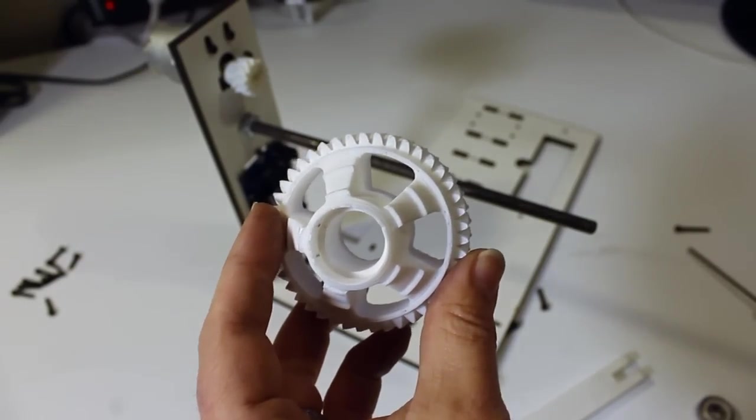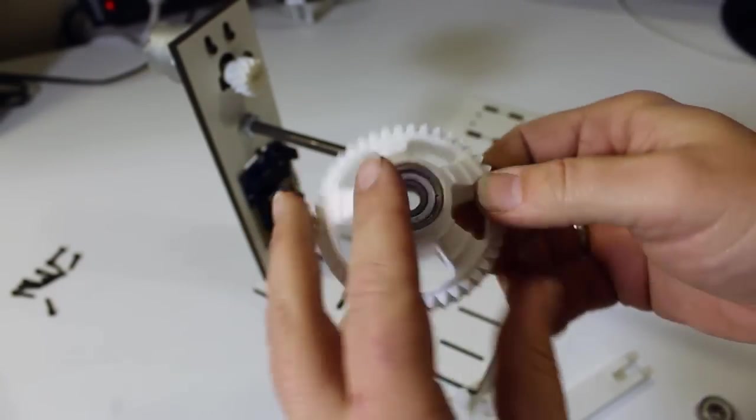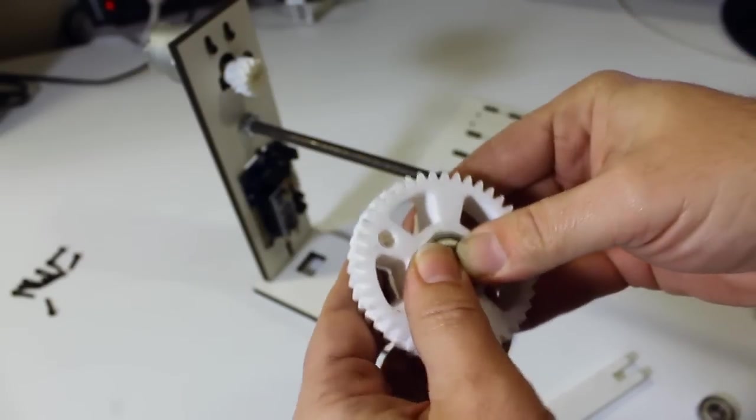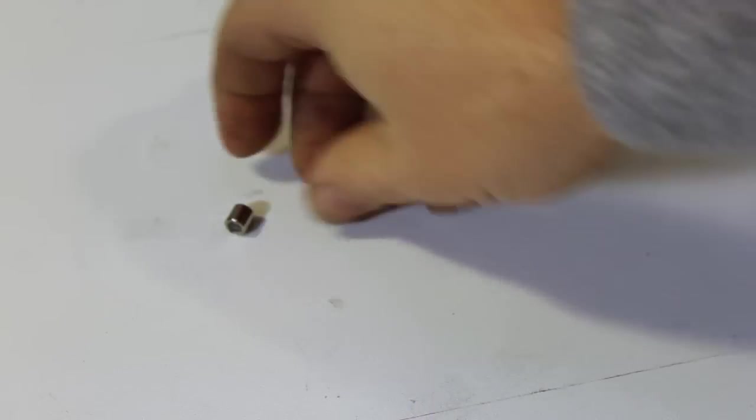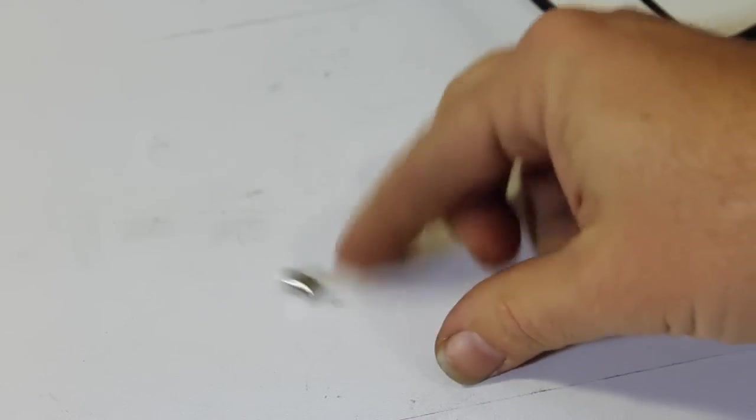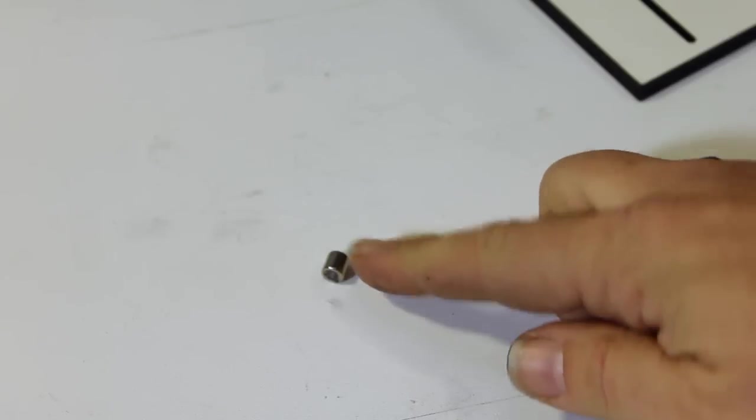Next is the printed spool gear. Put the 608 bearings onto the front and into the back. The magnet goes into the hole at the bottom of the gear, but it needs to be oriented in the correct direction. Give it a few little flicks and get it to spin around freely so it settles in the direction it wants to settle in.